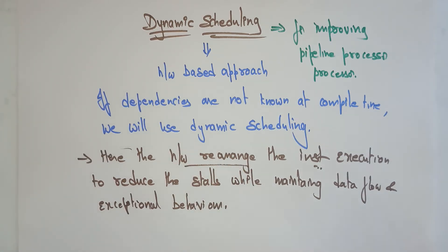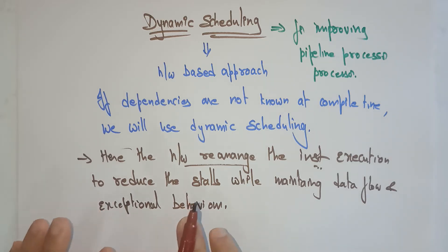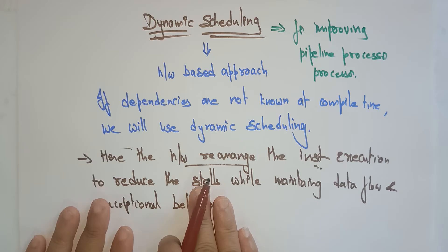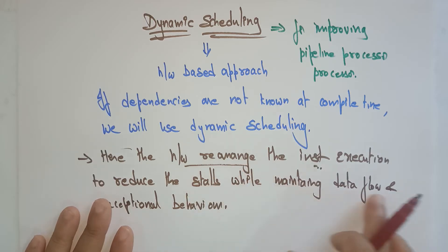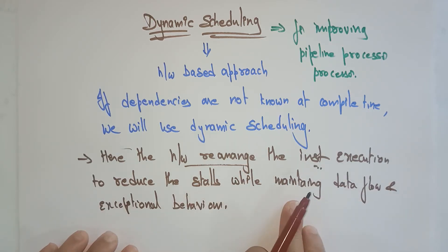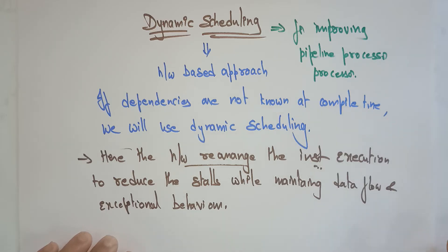In dynamic scheduling, the hardware itself rearranges the instruction execution to reduce stalls, while maintaining data flow and exceptional behavior. Whereas in static scheduling, if dependencies are known, the compiler rearranges the instructions. But here, the hardware itself rearranges instruction execution to reduce stalls while maintaining data flow and exceptional behavior.